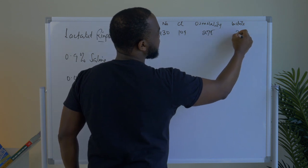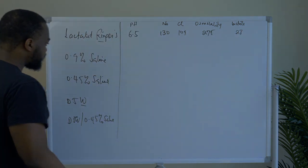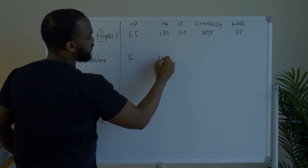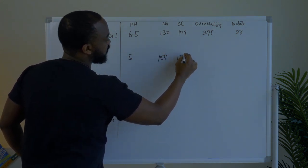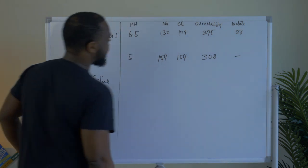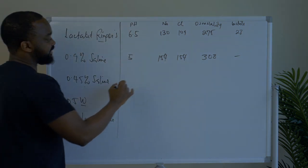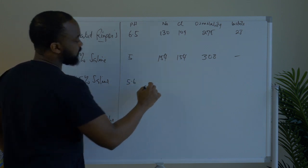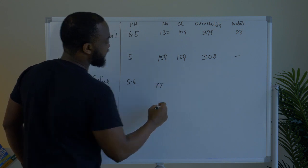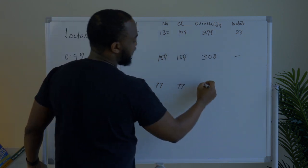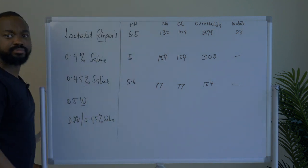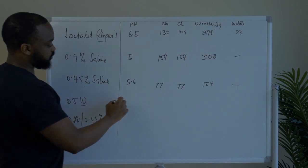With 0.9% normal saline, the pH is around 5, sodium content is 154, chloride content is also 154, and osmolality comes to around 308 — it doesn't have any lactate. With 0.45% saline, the pH is around 5.6, sodium is half of normal saline at about 77, chloride is also 77, osmolality is around 154, and it also has no lactate.